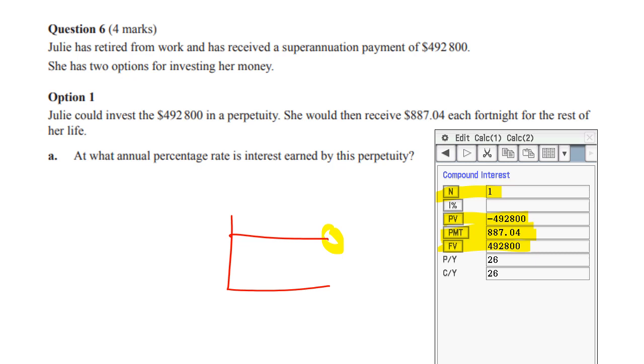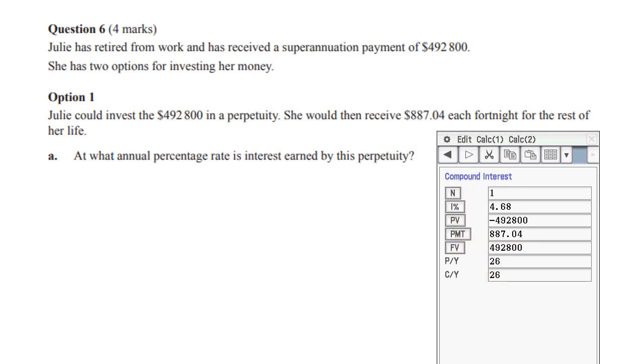And then all you have to do is press the interest rate button and it will pop out the interest rate correct for you. Don't forget that it's 26 for fortnightly on both of these and there you have it.